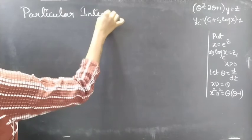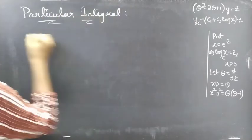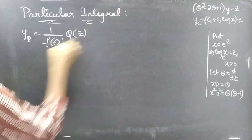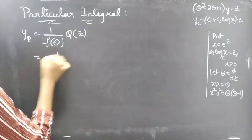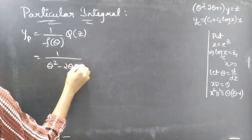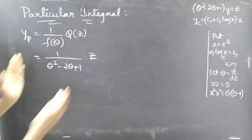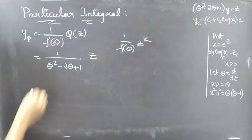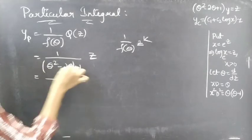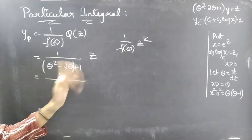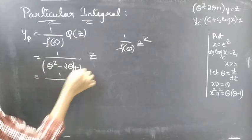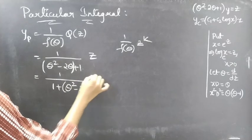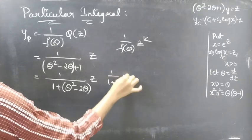Now let's find yp, the particular integral. We use yp = 1/f(θ) · Q(z). Here f(θ) = θ² − 2θ + 1 and Q(z) = z. This is of the 1/f(θ) acting on z^k form. We take the lowest degree term out: write θ² − 2θ + 1 as 1 + (θ² − 2θ), giving 1/[1 + (θ² − 2θ)] into z, which is of the 1/(1 + x) form.